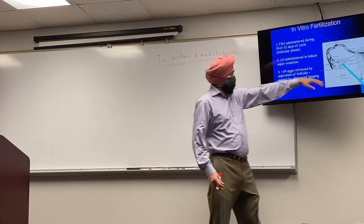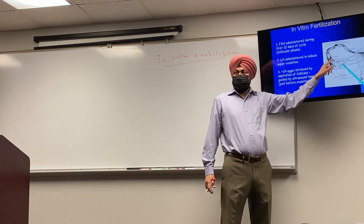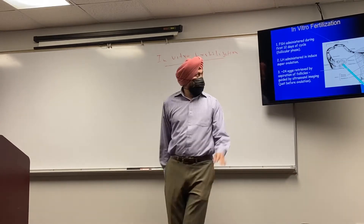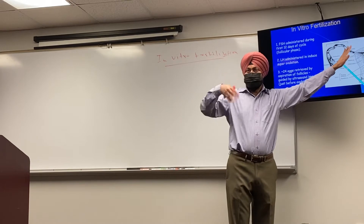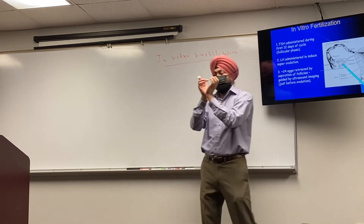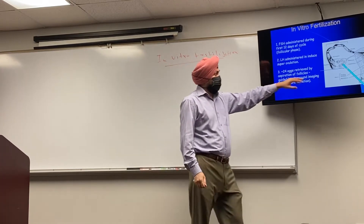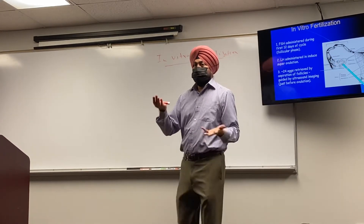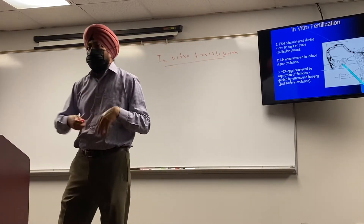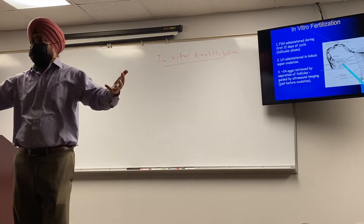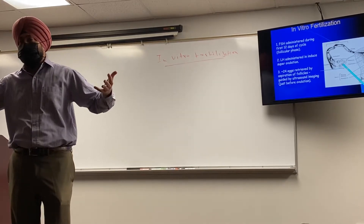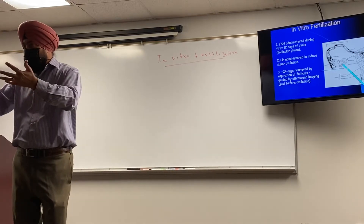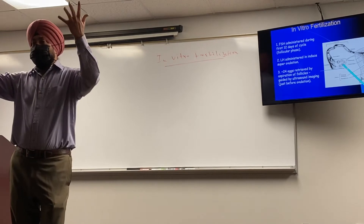From the ovary, oocytes are released, caught by the fimbriae, and travel to the oviduct and uterus. For IVF, the idea is you need to make many follicles start growing. A group of follicles start growing under the influence of follicle-stimulating hormone. If you want hyperovulation — more than five or seven follicles — you inject the female with follicle-stimulating hormone, which induces multiple follicles to grow.